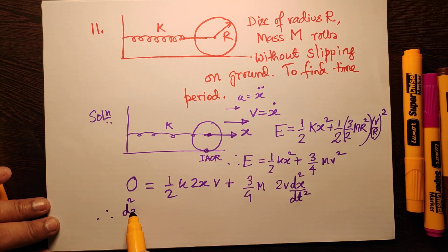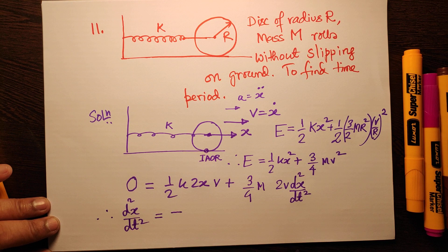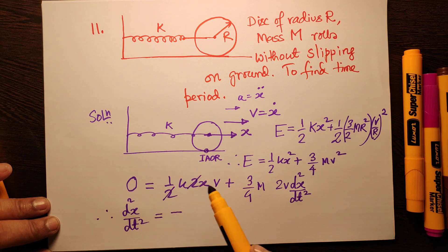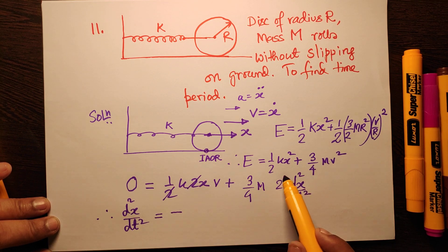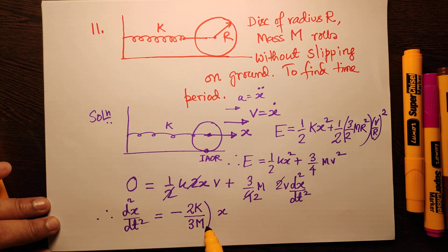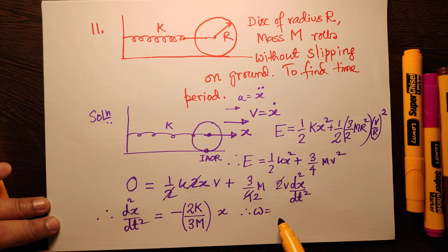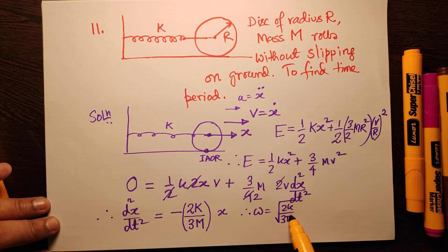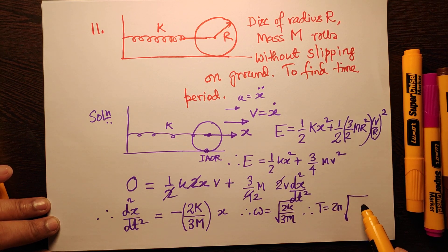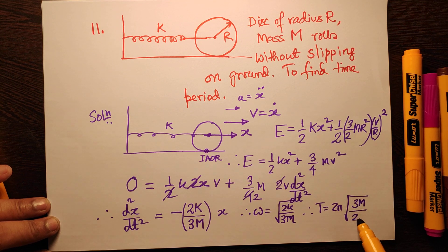Therefore d²x/dt² will be equal to minus - this 2 and 2 will cancel here. This will cancel. So 2k/(3m) multiplied by x. This is the ω². Hence ω is √(2k/3m) and hence the time period is 2π√(3m/2k).